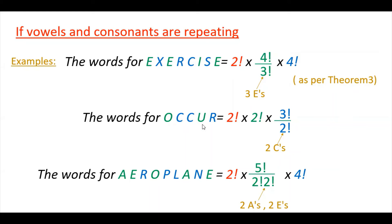Similarly for the word OCCUR: O and U are vowels, so write 2! × 2!; the consonants include C repeating, so divide accordingly. For the word AEROPLANE: the vowels are A, E, O, A, E — five total — where A repeats twice and E repeats twice, so you write 2! × (5! ÷ (2! × 2!)) for vowels. The consonants are four, giving × 4!. Apply this method whenever letters repeat in the word.